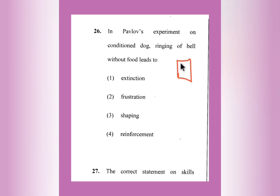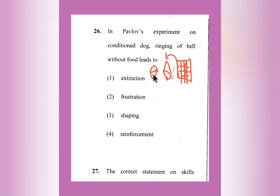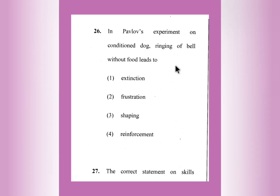In Pavlov's experiment, a dog was placed inside a cage. They used to ring the bell first, then give the food. Whenever they rang the bell, the dog used to salivate, and the food was given to the dog. Next time, again when the bell rings, the dog used to salivate and the food was given. This was repeated many times. After sometime, they did not provide any food — only rang the bell — but the dog used to salivate.